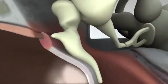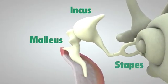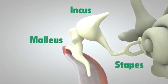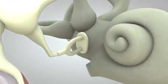The eardrum vibrates three tiny bones called the malleus, incus, and stapes. These bones amplify or increase the sound vibrations and send them to the cochlea.